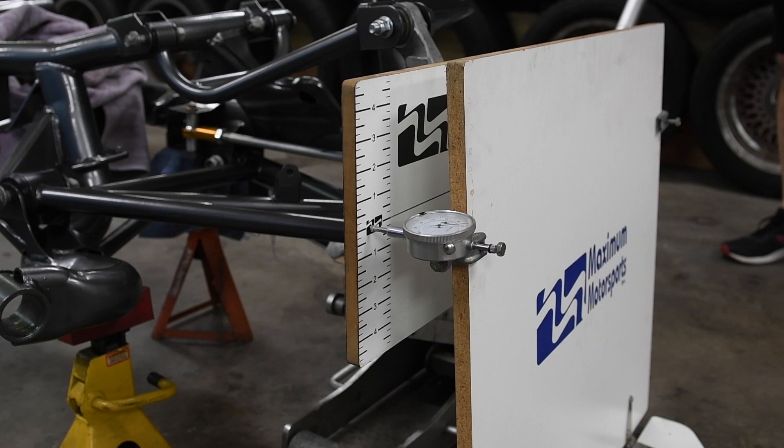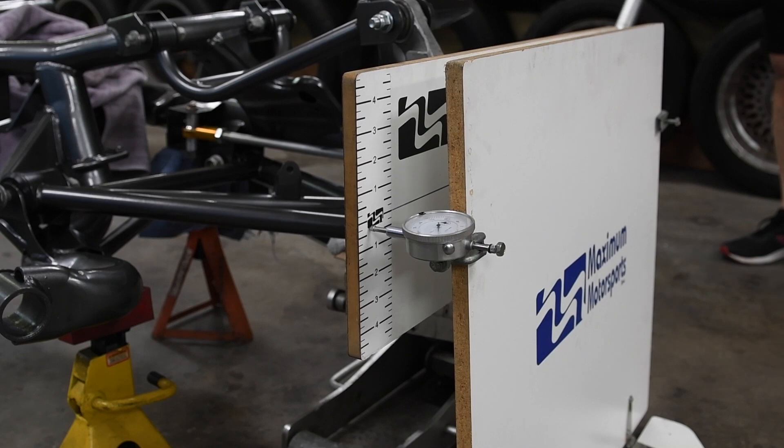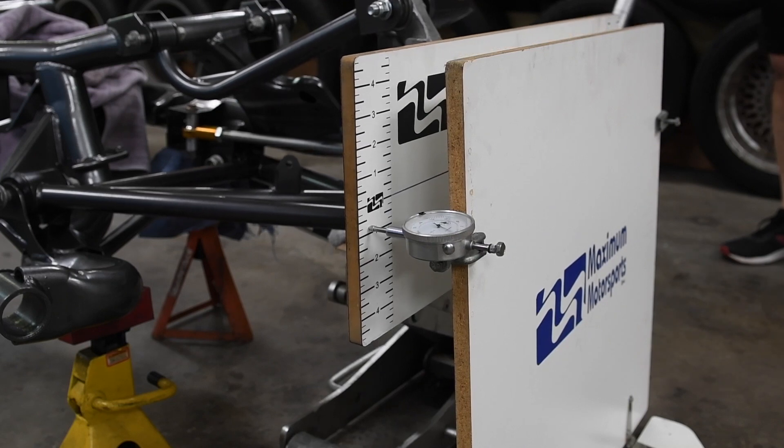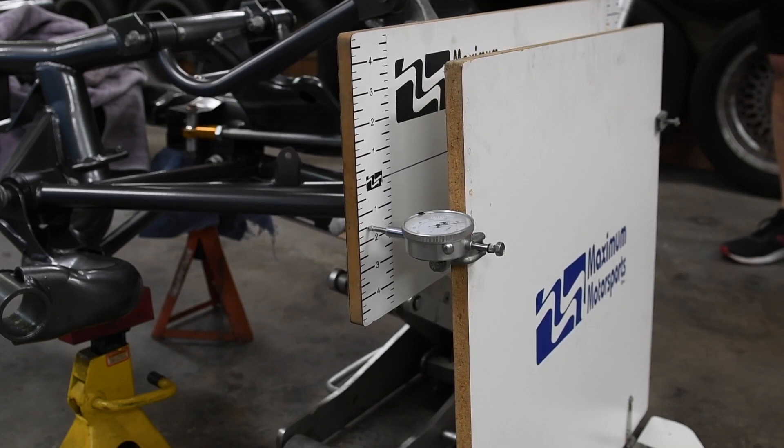This is also important. Get the toe and camber close to what you think you'll be running after you're done. It doesn't have to be perfect, just close, and symmetrical from side to side. Camber angle and tie rod length will affect the shapes of the bump steer curves.